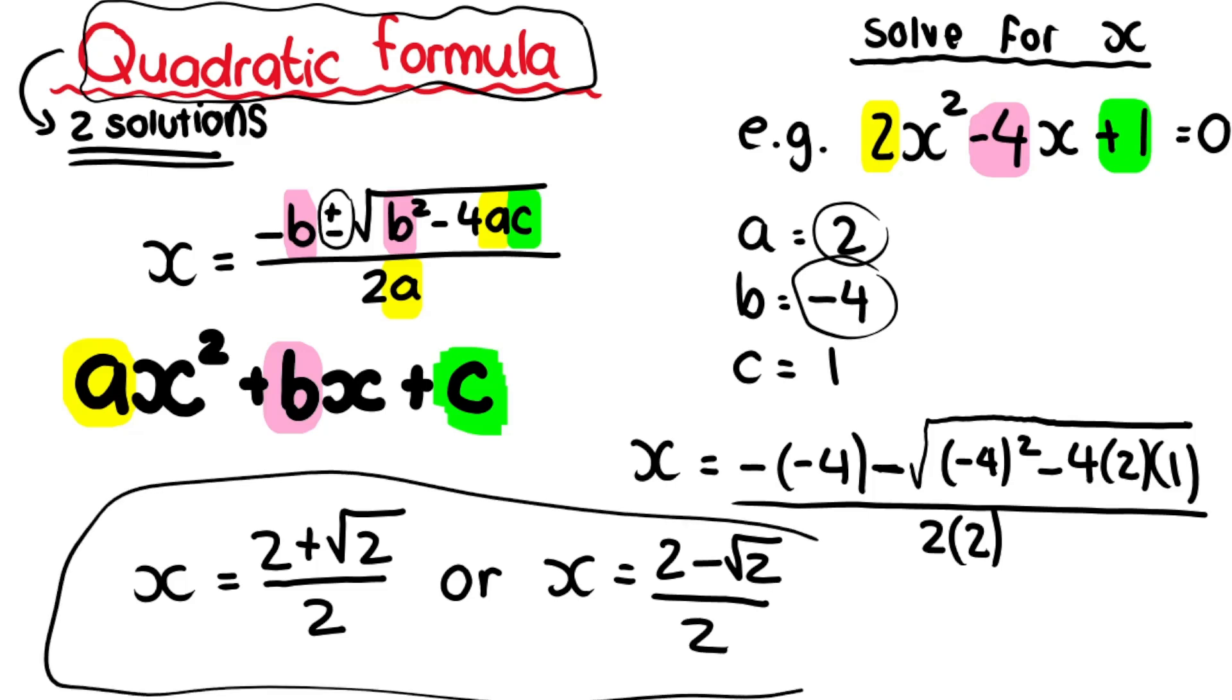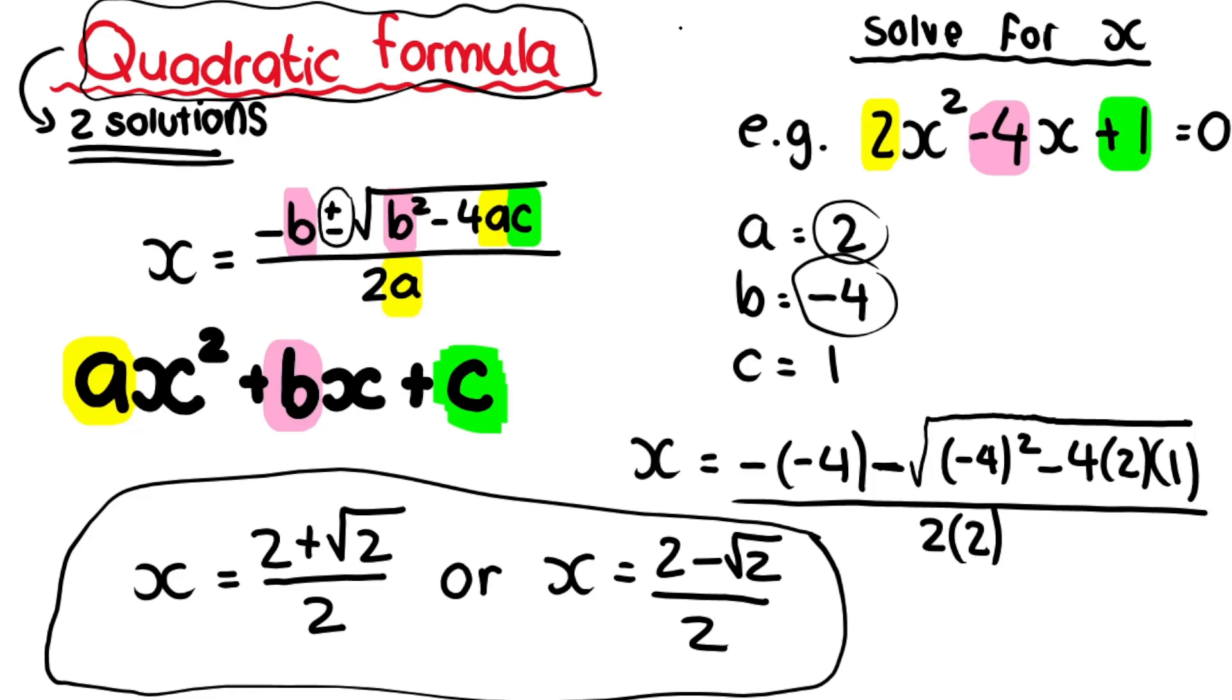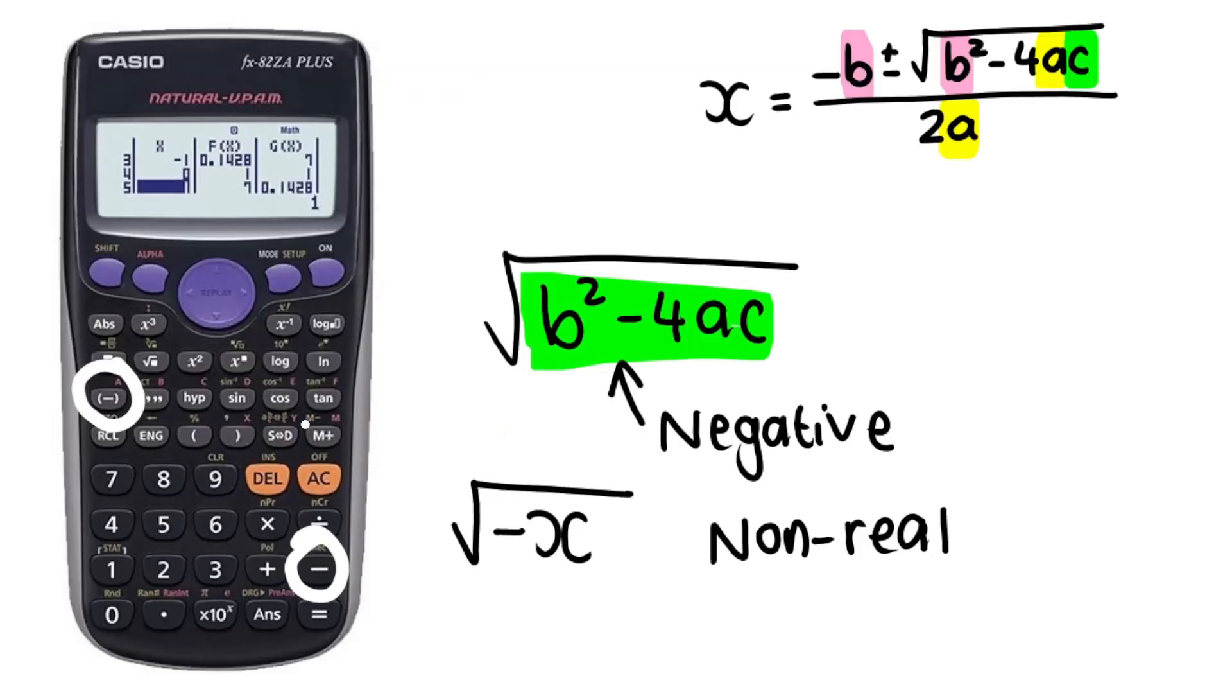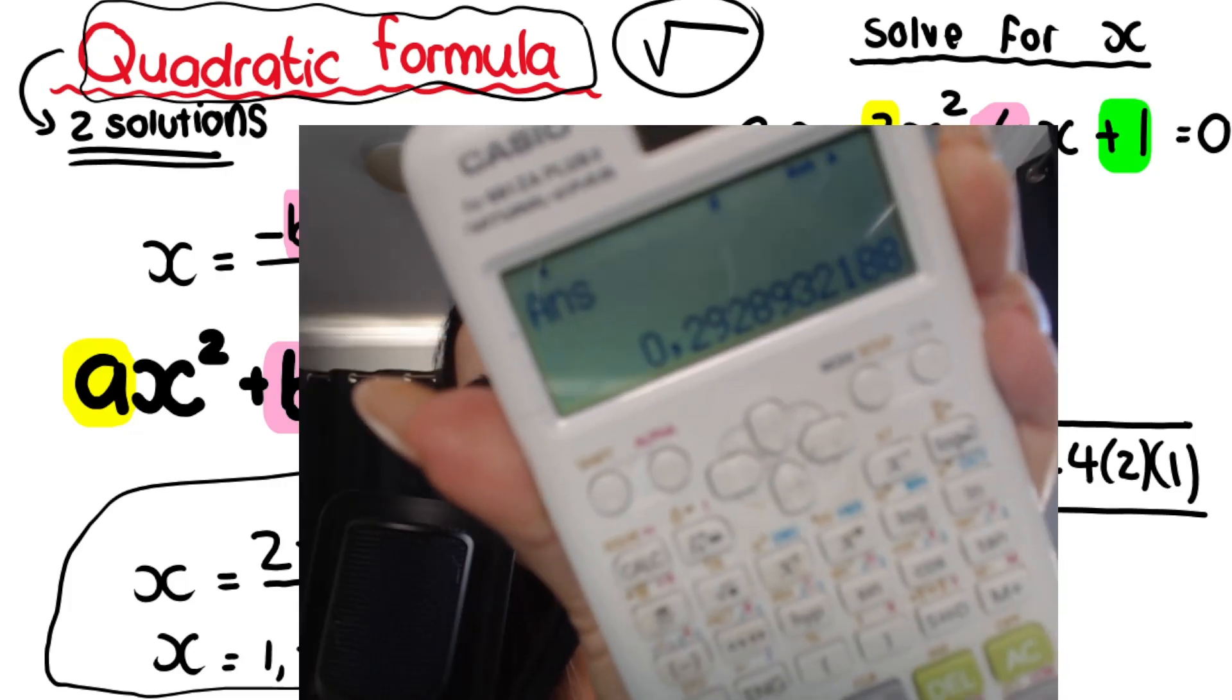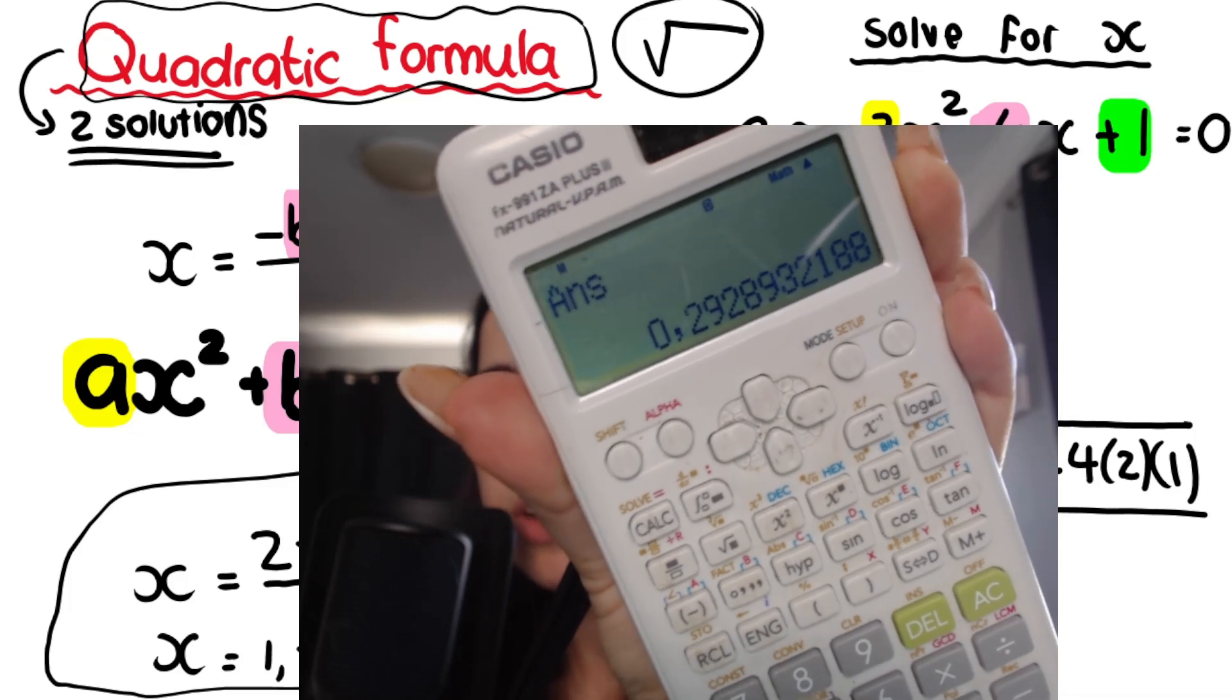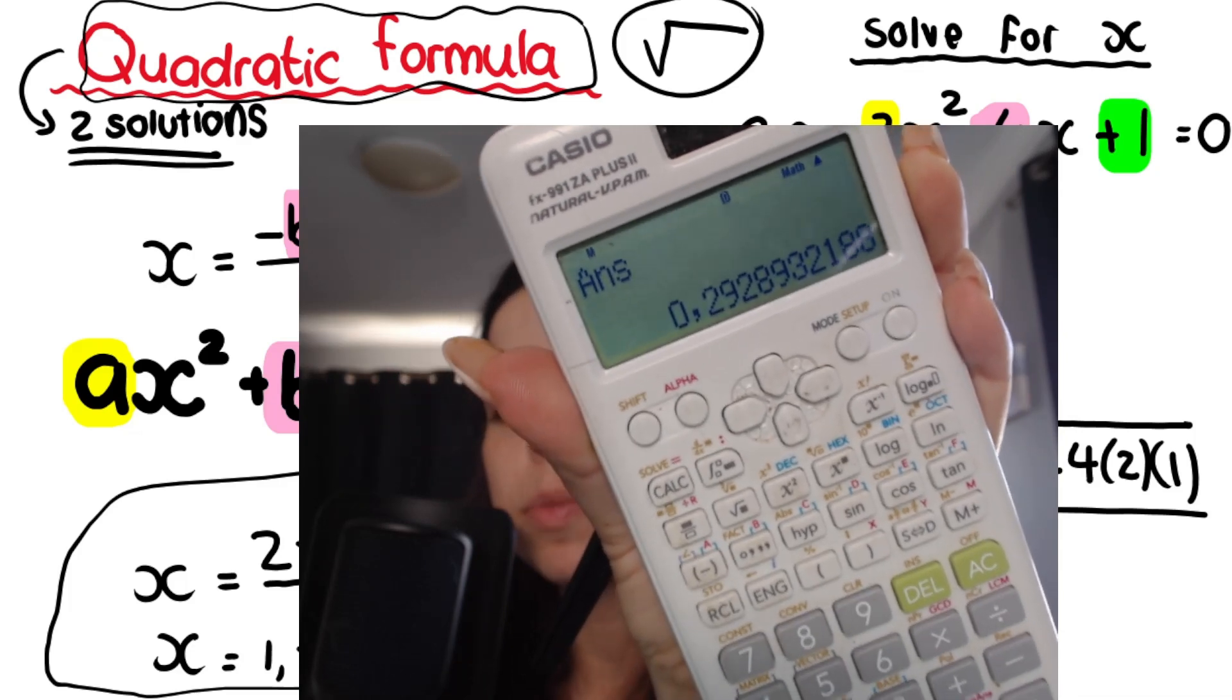If they ask for it in surd form, you leave it like this. Surd form means you will see roots. If they want it in decimal form, you press the S-D button on your calculator. You will get 1.71 for one solution and 0.29 for the other. As you can see, these are irrational numbers. If you get them on your calculator, the numbers go on and on. I just rounded them off to two decimals.